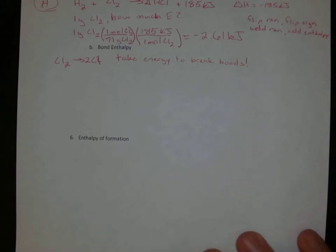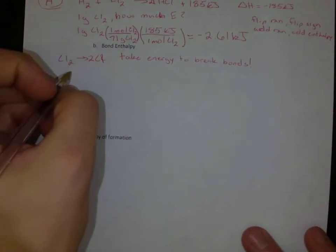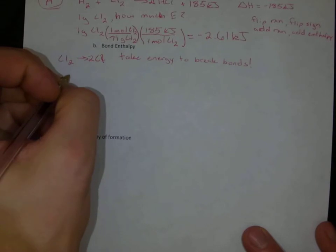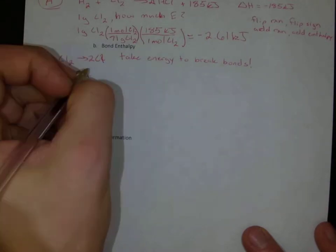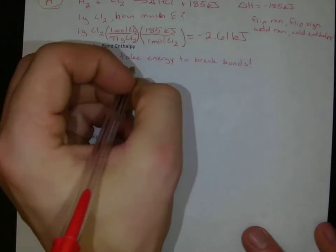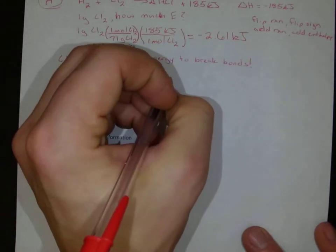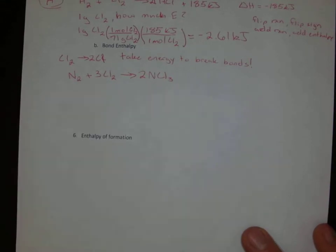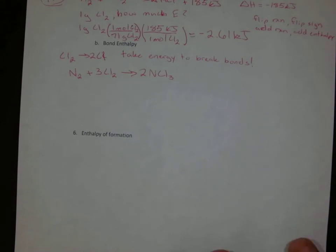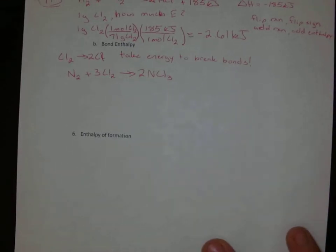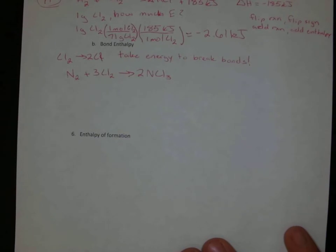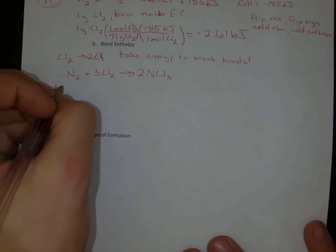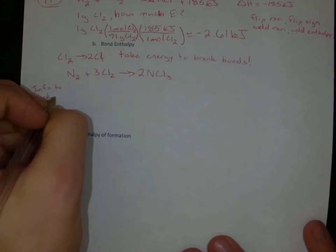But if we have a reaction again, let's take another reaction, we can actually calculate how much energy it takes for that reaction to occur. So if I have N2 plus 3Cl2, that's going to go to 2NCl3. We can actually, we know the bond enthalpies for each of these compounds because it's been measured by chemists. So this comes from a table in our book. This is information that you can look up. This would be information that they would give us on the AP test.